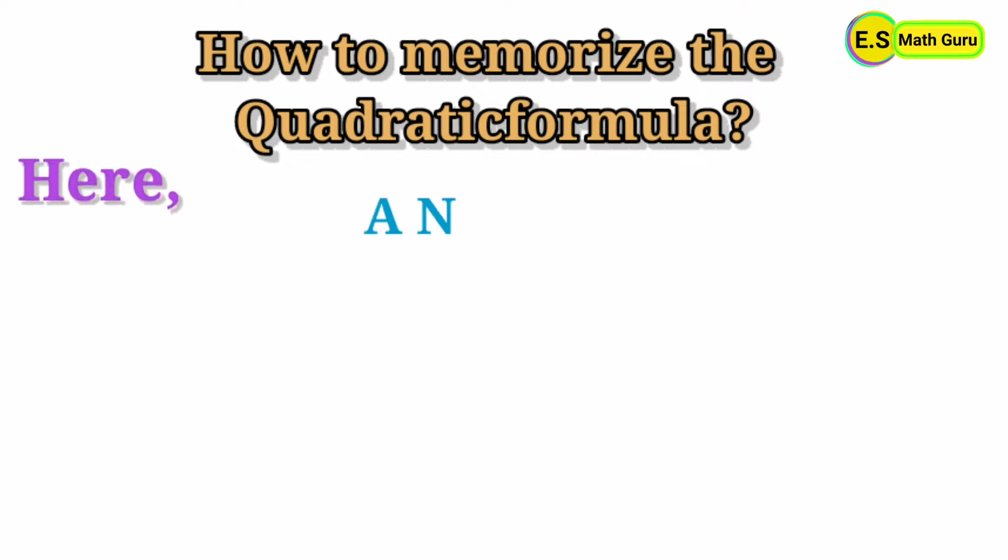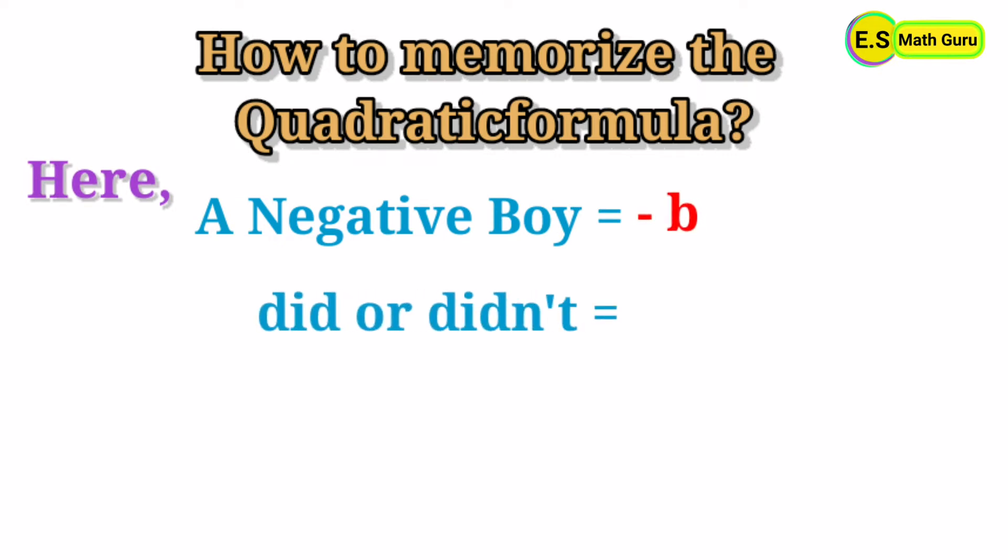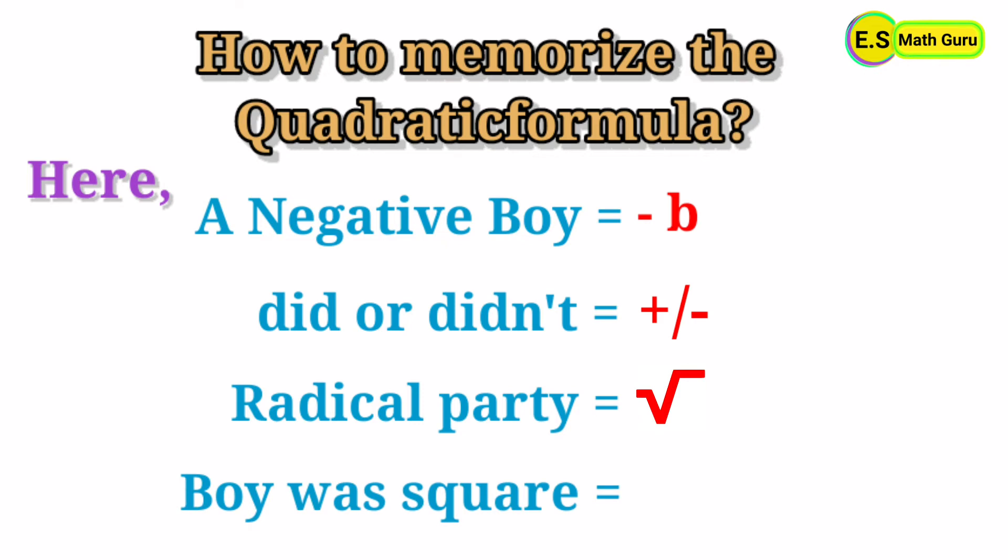Here, 'a negative boy' means -b. 'Did or didn't' means plus or minus (±). 'Radical party' means the square root sign. 'The boy was square' means b².